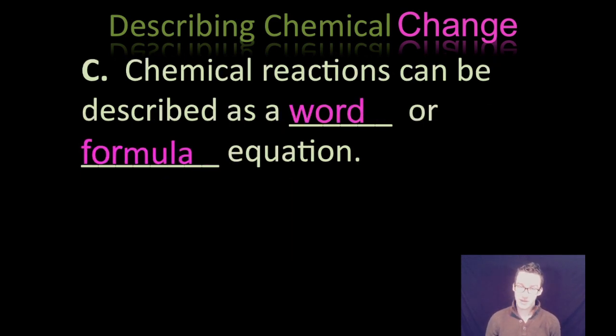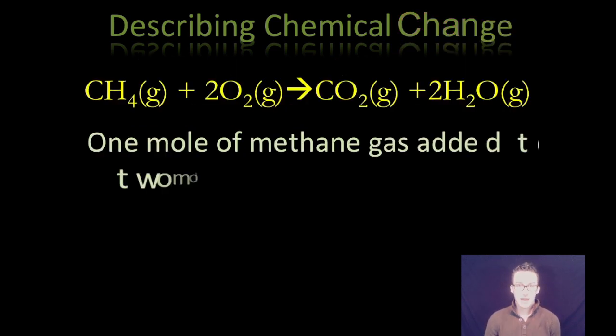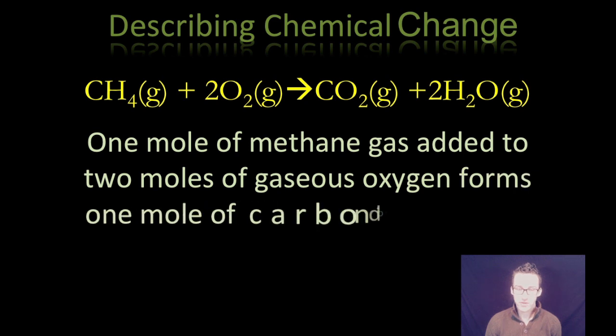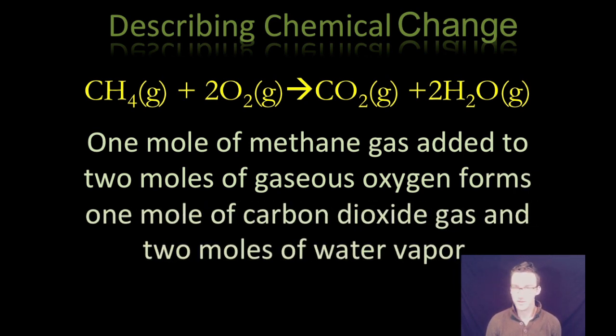Okay, and then lastly chemical reactions can be described as a word or a formula equation. I personally prefer the formula equation. It's sort of like the text message format of chemical reactions. Keeps things short and sweet. As you take a look at your screen, you've got in yellow there the formula format of the chemical reaction. Beneath that in light green you have the word format. Again, as you can tell there, the formula format is a lot easier, a lot quicker to write out than the word format is, but you have to be able to interpret what that formula format means.